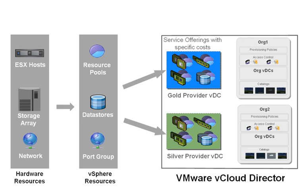Each tenant has a self-service access portal where they can efficiently manage their virtual infrastructure resources. Based on tenant requirements for virtual machines, further layers of abstractions are created called organization vDCs with resource allocation from the provider vDCs. In this example, both tenants org1 and org2 have VMs that require the gold class of service, so the org vDCs are created from the parent gold provider vDC. Org2 also has test VMs without high SLA requirements, so another org vDC is created from the silver provider vDC.